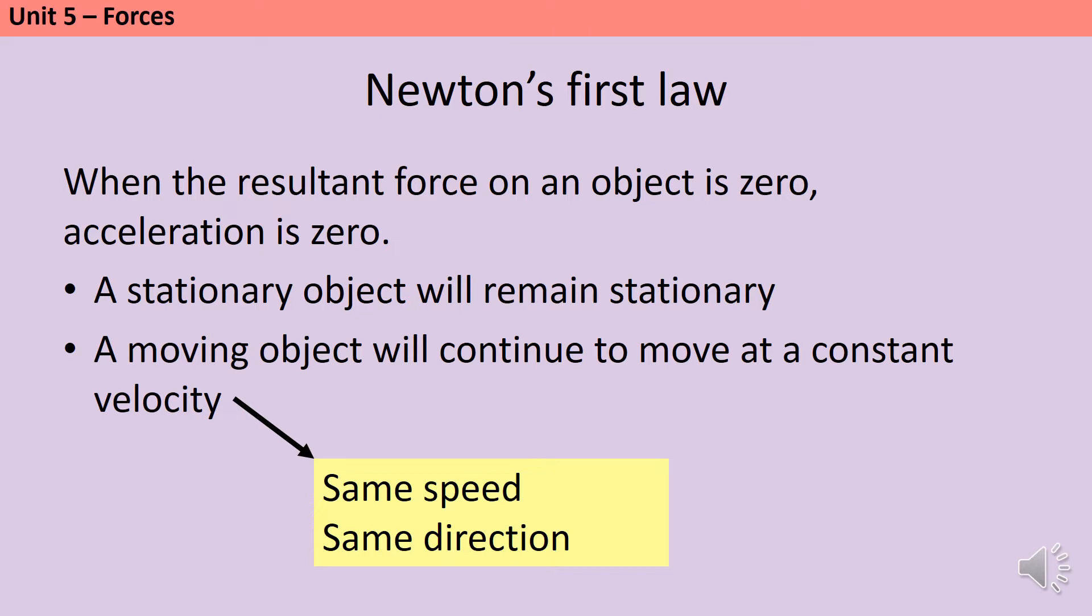Newton's first law tells us that when the resultant force or the overall force that is acting on an object is zero, acceleration is also zero. So this means that a stationary object will remain stationary, and a moving object will continue to move at a constant velocity.